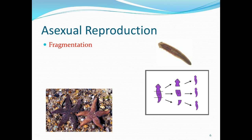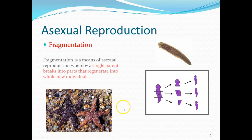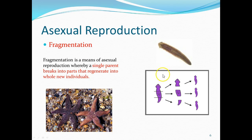An extreme version of this is what's called fragmentation. There are some organisms that you can break into parts, and each individual part will grow into a new organism. One of the most common examples are the flatworms, or platyhelminthes. You can cut a flatworm into three pieces, and all three pieces will regenerate entirely new organisms — so one organism gave birth to three organisms all by itself.